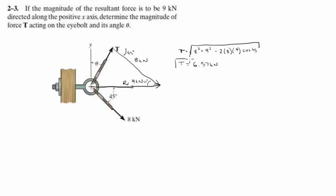That would be the magnitude. Now the direction we can find applying the law of sines. It's super simple. We know that the sine of 90 degrees minus theta over 8 is equal to the sine of 45 degrees over 6.57. Theta will be equal to 30.6 degrees.